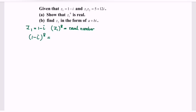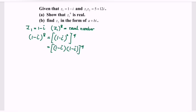Rewrite the expression as (1 minus i) to the power of 2, all to the power of 4. Expanding: (1 minus i) multiplied by (1 minus i) gives us 1 minus 2i minus 1, to the power of 4. Finally, we will have negative 2i to the power of 4.